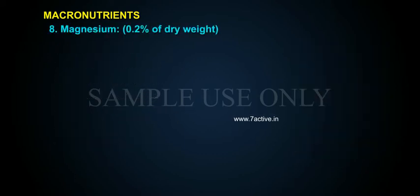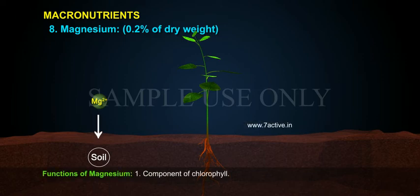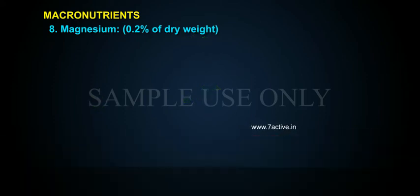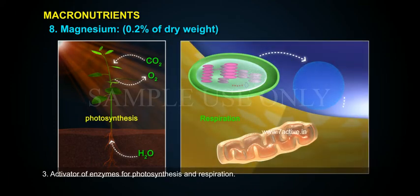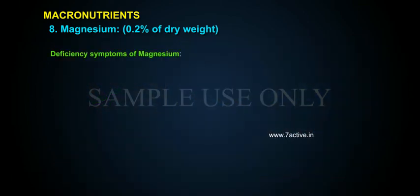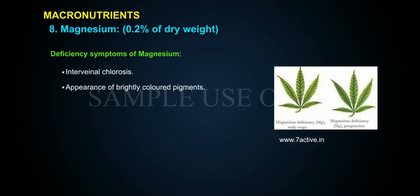Magnesium constitutes 0.2% of dry weight. Source: soil, absorbed as Mg2+. Functions: It is a component of chlorophyll. It controls binding of two subunits of ribosomes during protein synthesis. It is an activator of enzymes for photosynthesis and respiration. Deficiency Symptoms: Interveinal chlorosis, appearance of brightly colored pigments, and necrosis of older leaves.